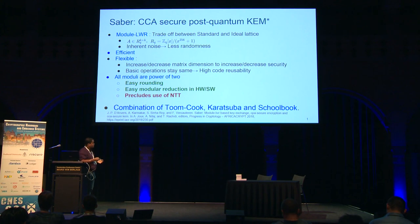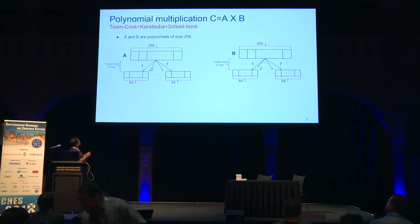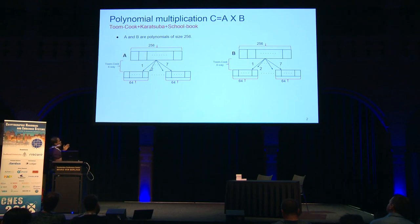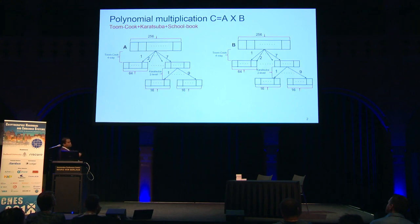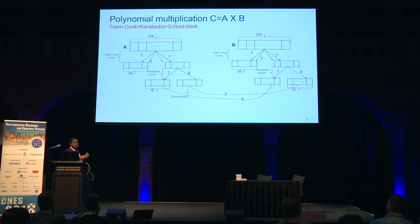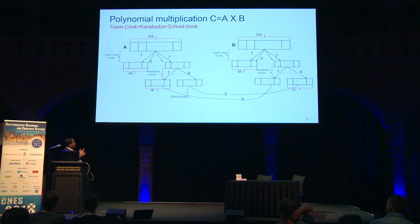Just for a recapitulation, how this multiplication is done: we have two polynomials A and B, both of size 256, and we want to multiply them to get the product C. At the first level we use Toom-Cook 4-way, which reduces the big 256×256 multiplication into seven smaller 64×64 multiplications. Then we use two levels of Karatsuba, which reduces each 64×64 multiplication into nine 16×16 multiplications. Then we do the multiplication using Schoolbook. So to multiply two 256×256 polynomials, we do seven times nine — 63 Schoolbook multiplications. To speed up overall multiplication, if we can speed up Schoolbook multiplication, that's great.